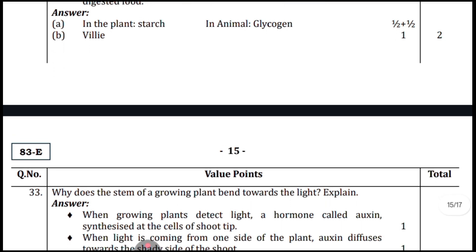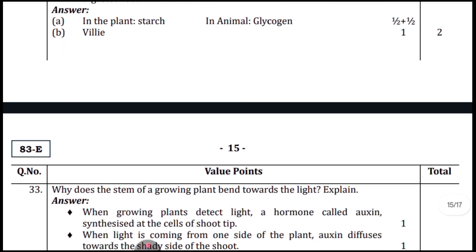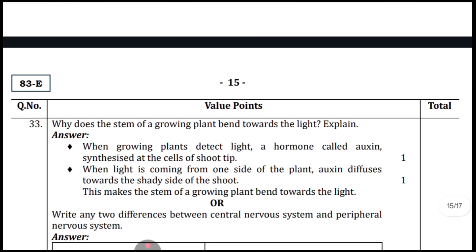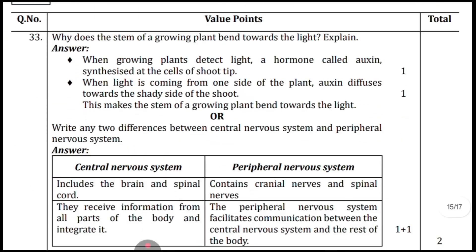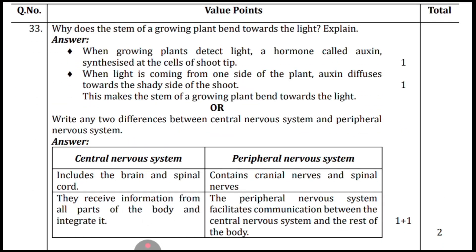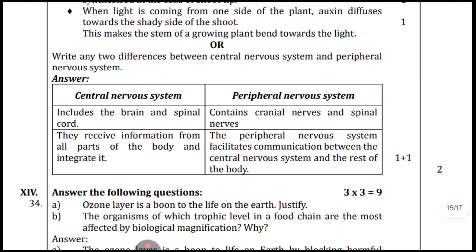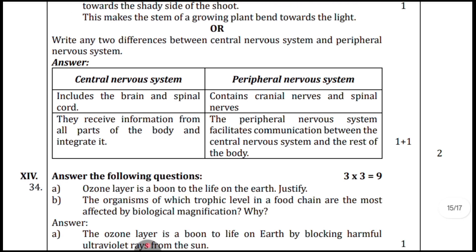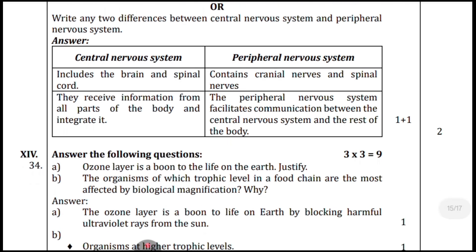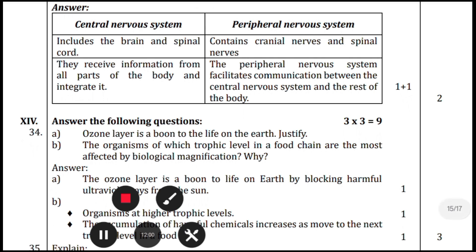Question thirty-three: why does the stem of a growing plant bend towards light? Here is the point-wise answer — write answers point-wise so it is easy for the evaluator to award marks. Part B: write two differences between the central nervous system and the peripheral nervous system — here are the point-wise answers.